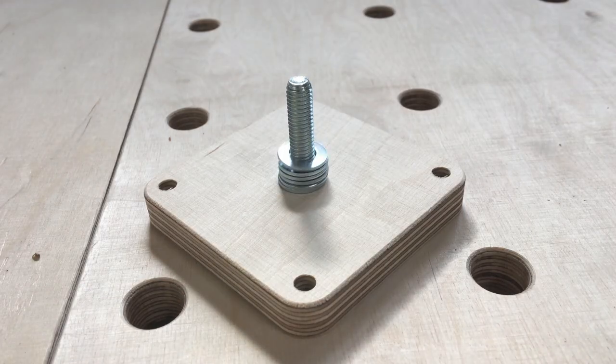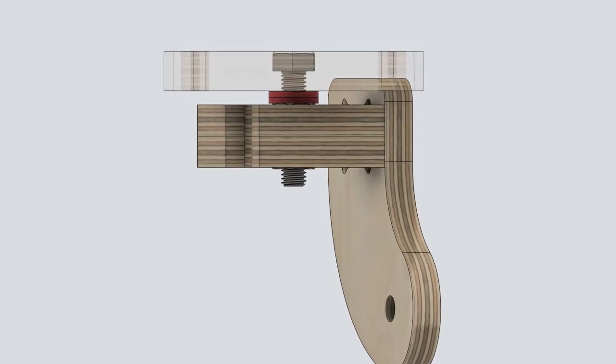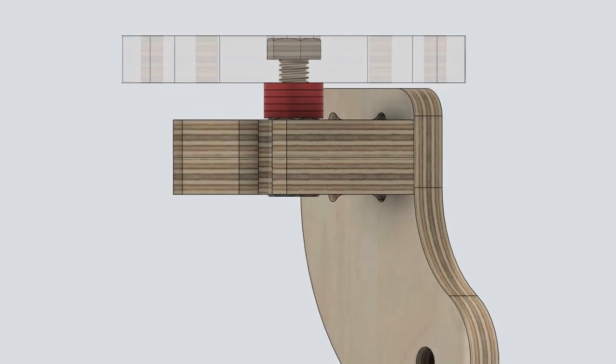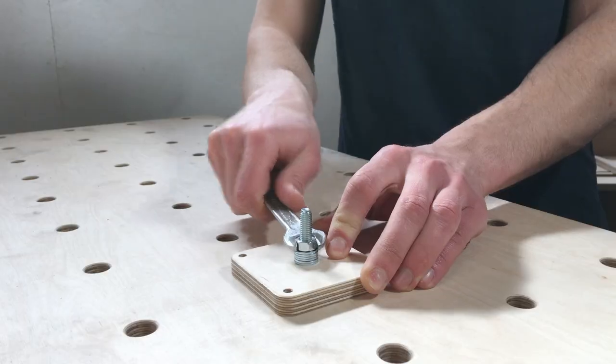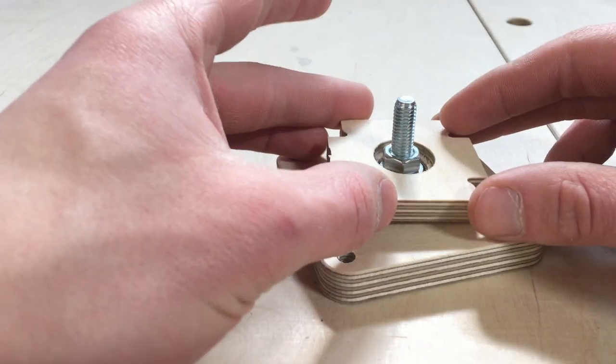Then I could add some washers. These serve as spacers between the base panel and the caster side components. I used the nut to secure the washers in place. Then I could add one of the bearing holder components.